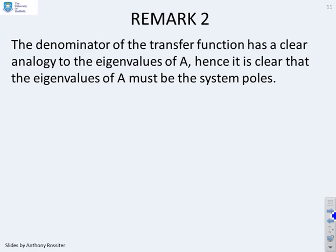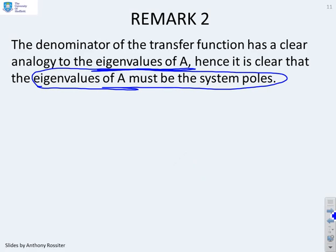So remark: the denominator of a transfer function has a clear analogy to the eigenvalues of the matrix A, and in fact it's clear that the eigenvalues of A must be the system poles. This is a really important observation: the eigenvalues of the state space matrix A must be the system poles. So we'll show that here.